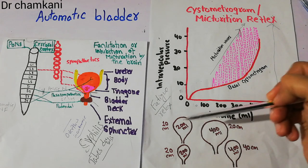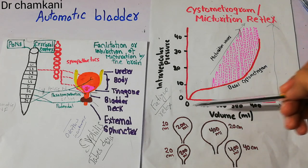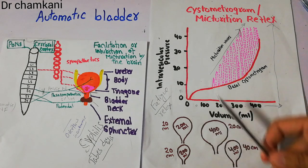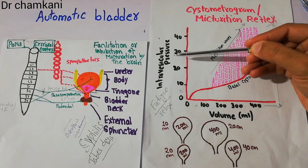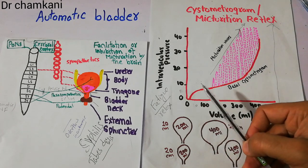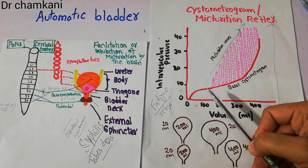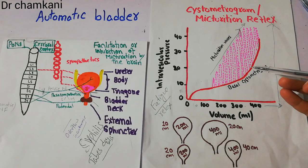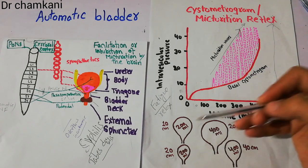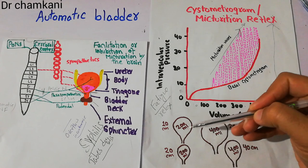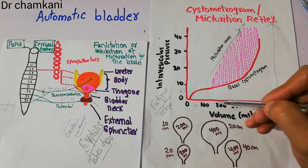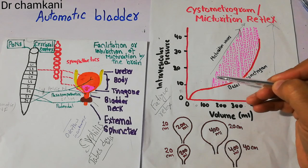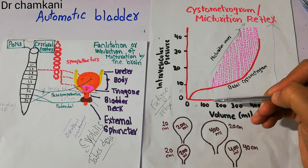If the urinary bladder keeps filling with urine, the volume of urine increases and the pressure in the bladder also keeps increasing. This has been plotted on a graph. When the volume of urine increases, the pressure also keeps increasing. There are two types of pressure: the red-coloured basal pressure, which is the tone in the wall of the urinary bladder increasing with volume, and on top of this basal pressure, acute periodic contractions of the urinary bladder occur.